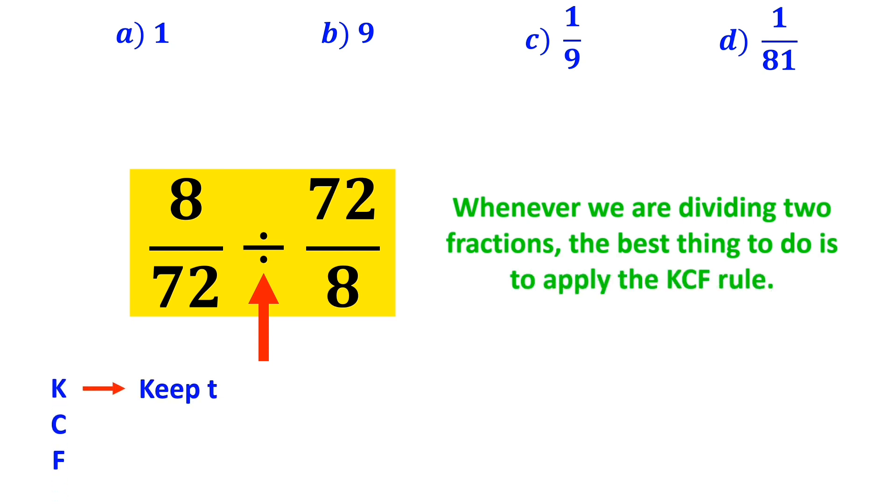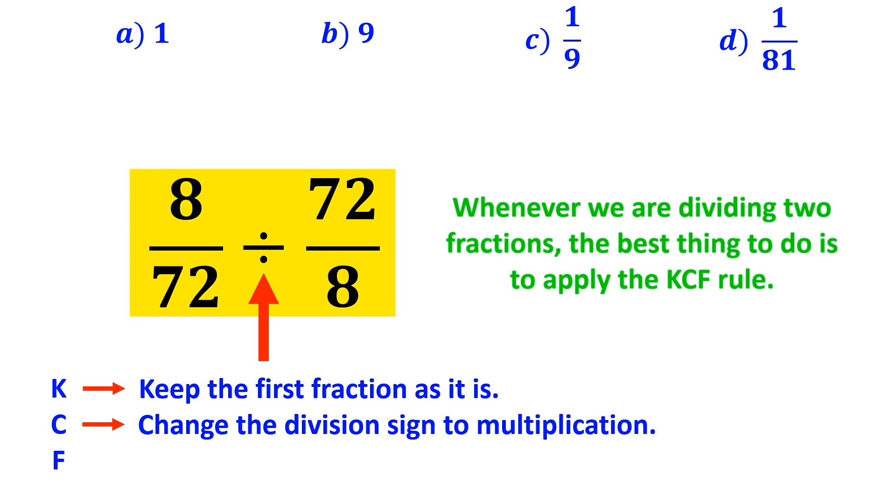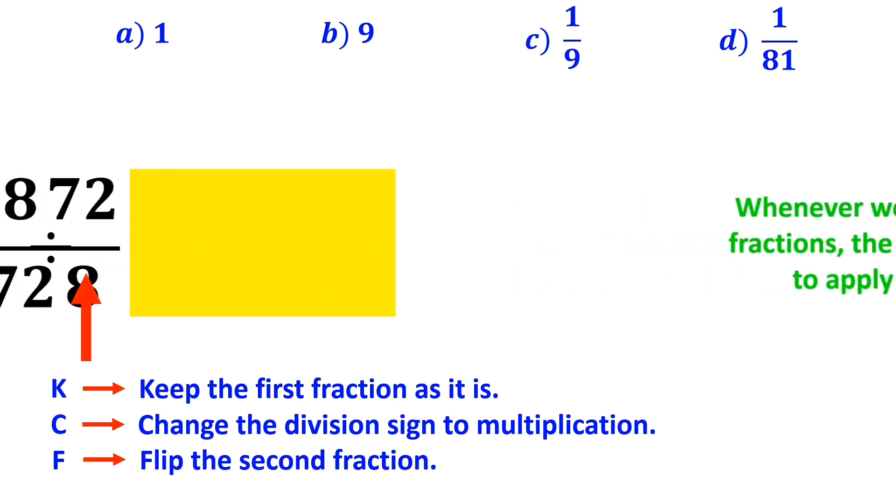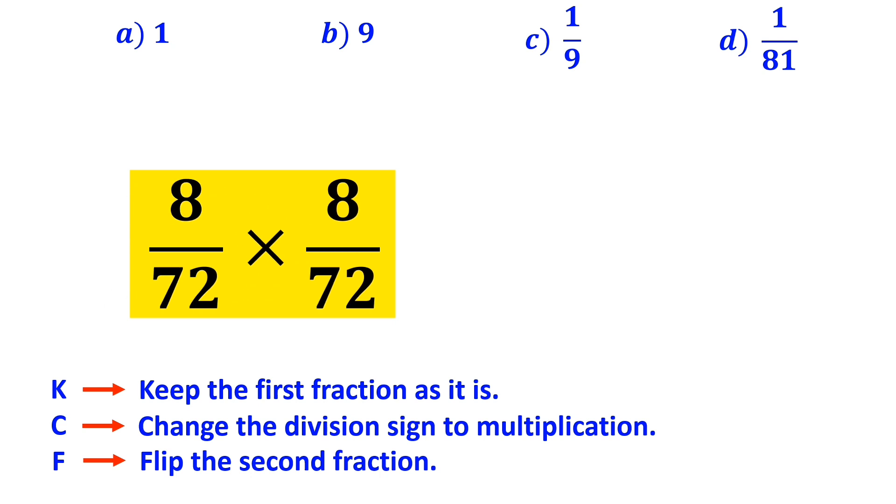In this rule, K means keep the first fraction as it is. C means change the division sign to multiplication. And F means flip the second fraction. So we replace the part that I've highlighted in yellow with 8 over 72 multiplied by 8 over 72.